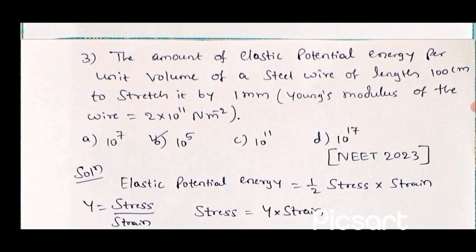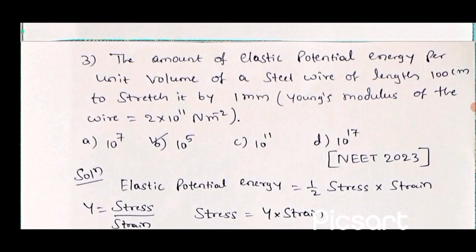Third question: the amount of elastic potential energy per unit volume of a steel wire of length 100 cm to stretch it by 1 mm. Young's modulus of the wire is equal to 2 into 10 to the power 11 N per m². This question is asked in NEET 2023. The options are: 10 raise to 7, 10 raise to 5, 10 raise to 11, 10 raise to 17. We have to calculate this using the elastic potential energy formula, which is half into stress into strain.